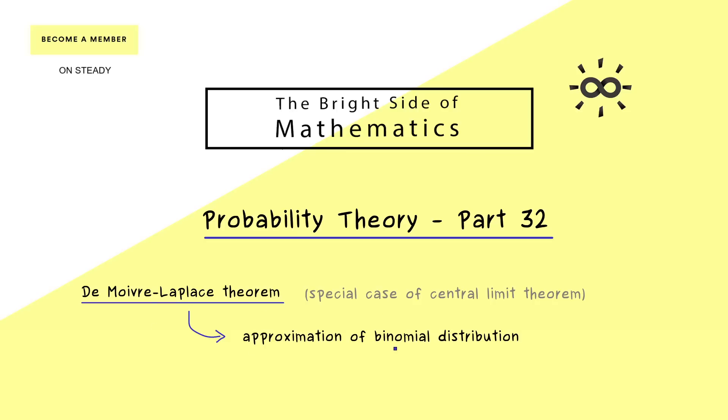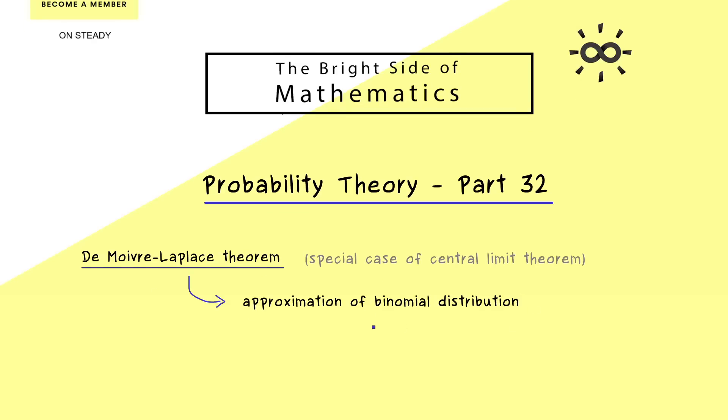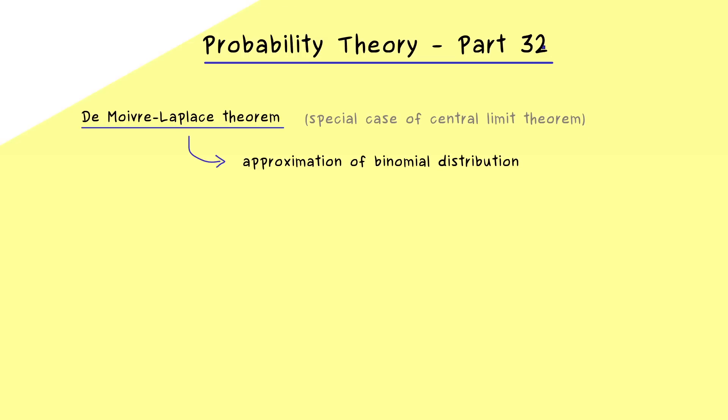it's all about the approximation of the binomial distribution. And this one is not completely new for us, because the binomial distribution was already discussed in part 4. Hence you might remember that we have exactly two inputs for the binomial distribution, namely a natural number n and the probability p. And now the thing is that such a binomial distribution comes out if we repeat a so-called Bernoulli experiment n times.